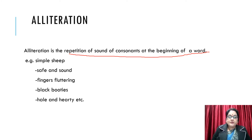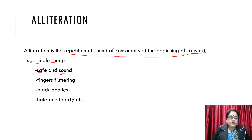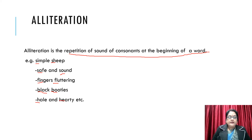For example: 'simple sheep' — here S has been repeated, which is a consonant. 'Safe and sound' — here also S has been repeated. 'Fingers fluttering' — here F has been repeated, which is also a consonant. 'Black booties' — again B has been repeated. 'Hail and hearty' — again H has been repeated, which is a consonant.